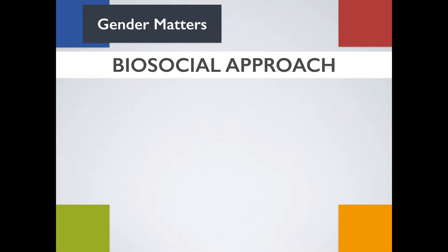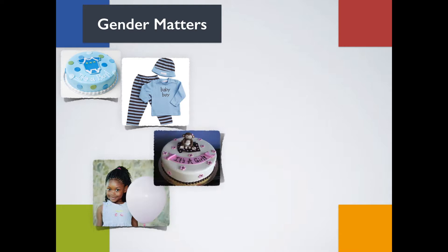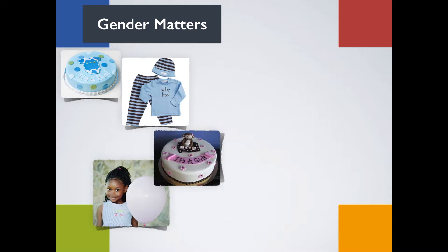Theorists John Money and Anke Ehrhardt created a theory called the bio-social approach. They believe that the social labeling and differential treatment of boys and girls begins when a child is born. Can you think of some examples? How about the association of the color blue with boys and pink with girls, or boys being encouraged not to cry when they hurt themselves versus girls being comforted?